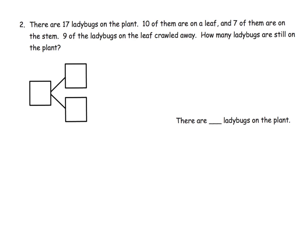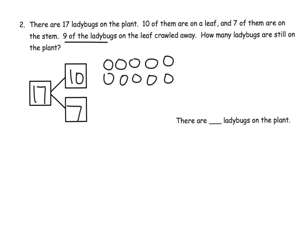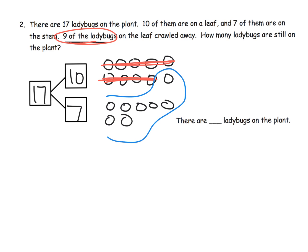Just more practice. There are 17 ladybugs on a plant — 10 of them are on a leaf and 7 are on the stem. 9 of the ladybugs on the leaf crawled away. We put 10 up here in a simulated 10-frame and 7 down here. Because we're subtracting 9, we can't subtract the 9 from the 7, so instead we subtract the 9 from the 10, leaving 1. That 1 plus the 7 gives us 8 ladybugs remaining on the plant.